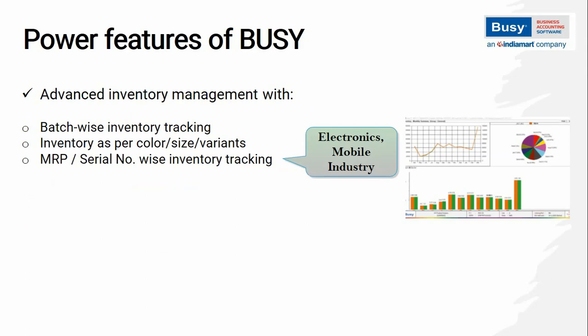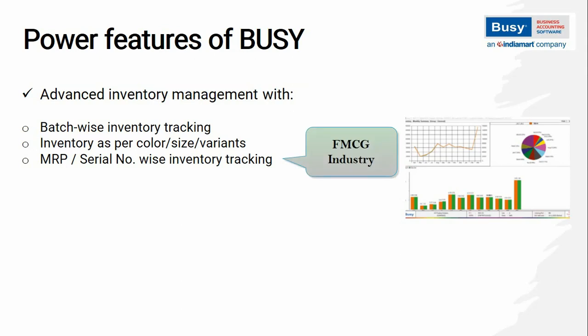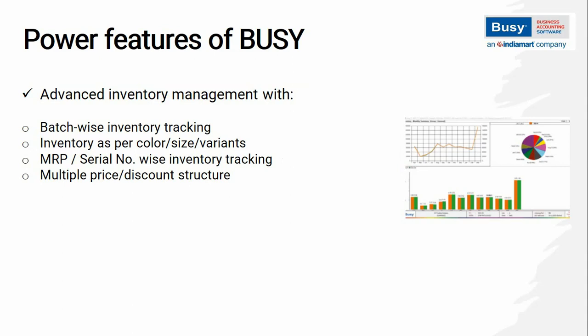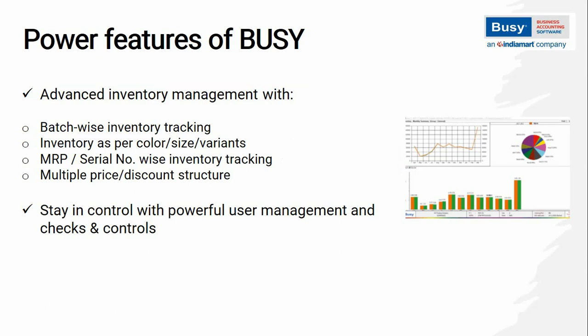For electronics and mobile industry, serial number with warranty details feature is useful. For FMCG, MRP-wise stock tracking is available. Along with this, according to customer, pricing and discount structure can also be defined. In Bizi, user management and checks and controls are very powerful, with the help of which data can be secured.